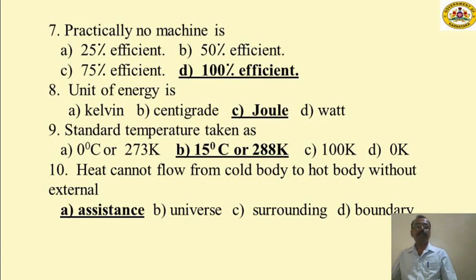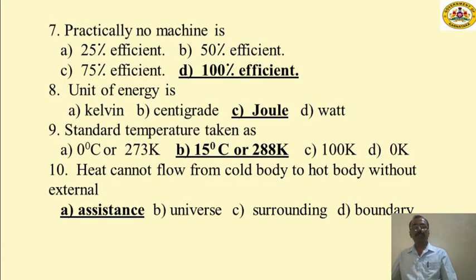MCQ: The unit of energy is option A Kelvin, option B centigrade, option C joule, option D Watt. The unit of energy is joule (or kilojoules or Newton meter). Only option C — joule — is correct.